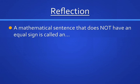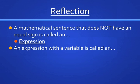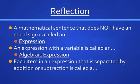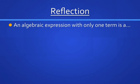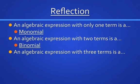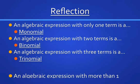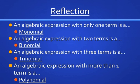Reflection: A mathematical sentence that does not have an equal sign is called an expression. There's a huge difference between an expression and an equation — expressions do not have an equal sign; an equation does. An expression with a variable is called an algebraic expression. Each item in an expression separated by addition or subtraction is called a term. An algebraic expression with only one term is a monomial, with two terms is a binomial, with three terms is a trinomial, and with more than one term is a polynomial. Binomials and trinomials are types of polynomials because they all have more than one term.